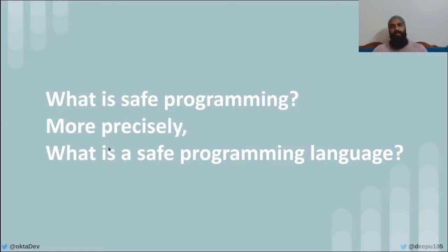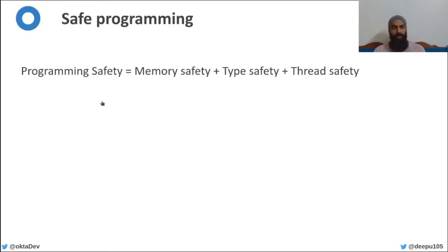So, what is safe programming? Or to be more precise, what does being safe mean for a programming language? Safety can be categorized into three: memory safety, type safety, and thread safety.